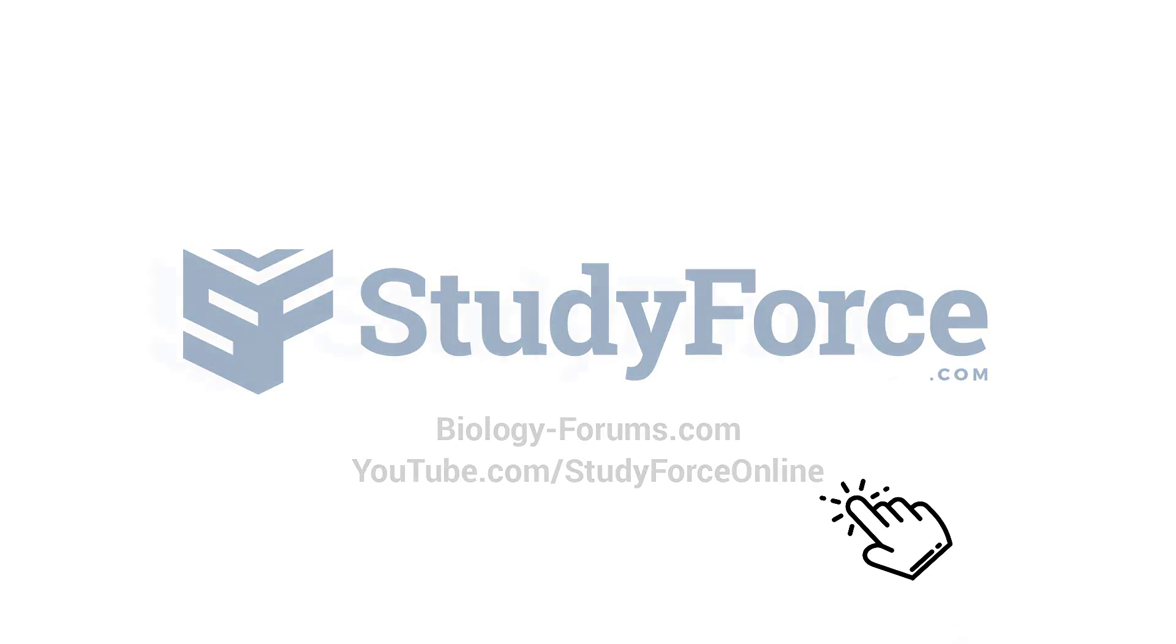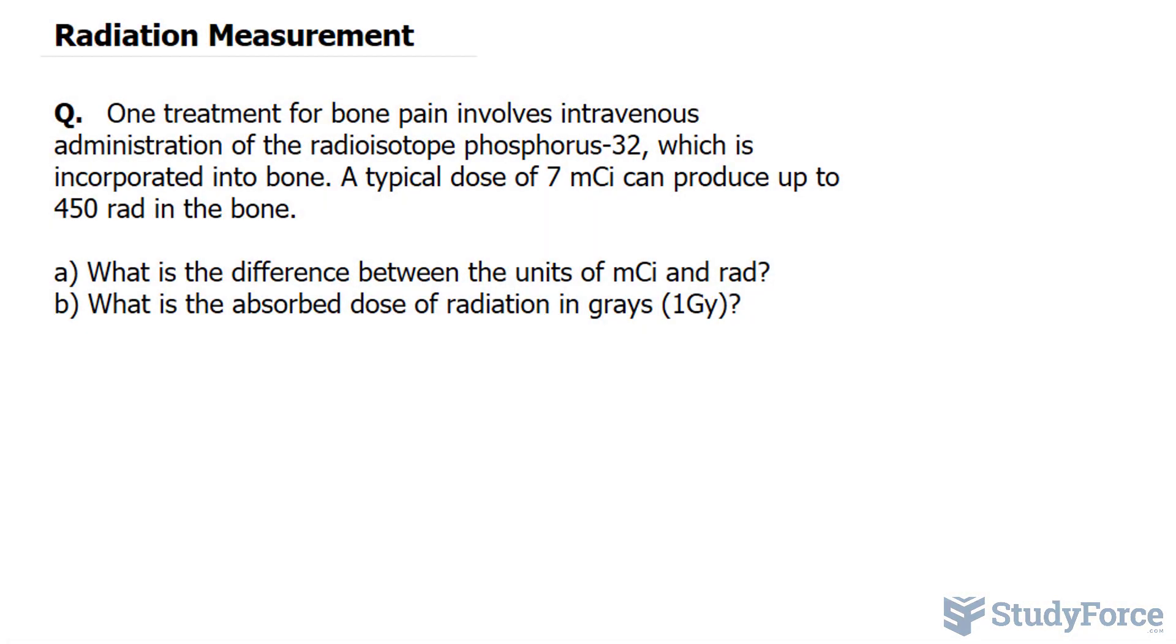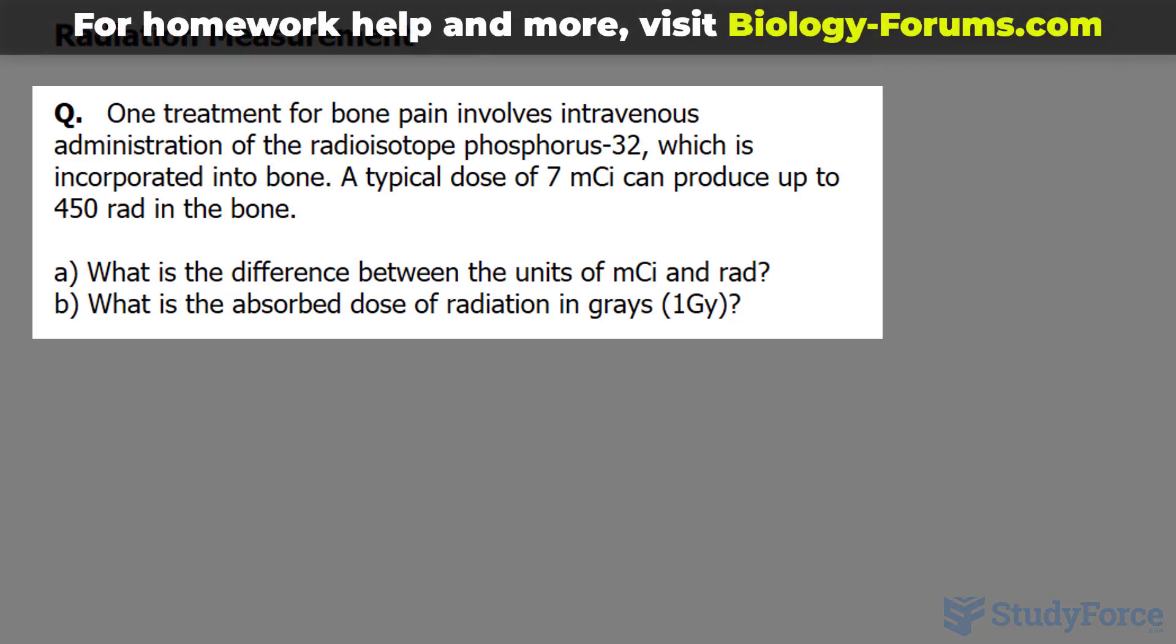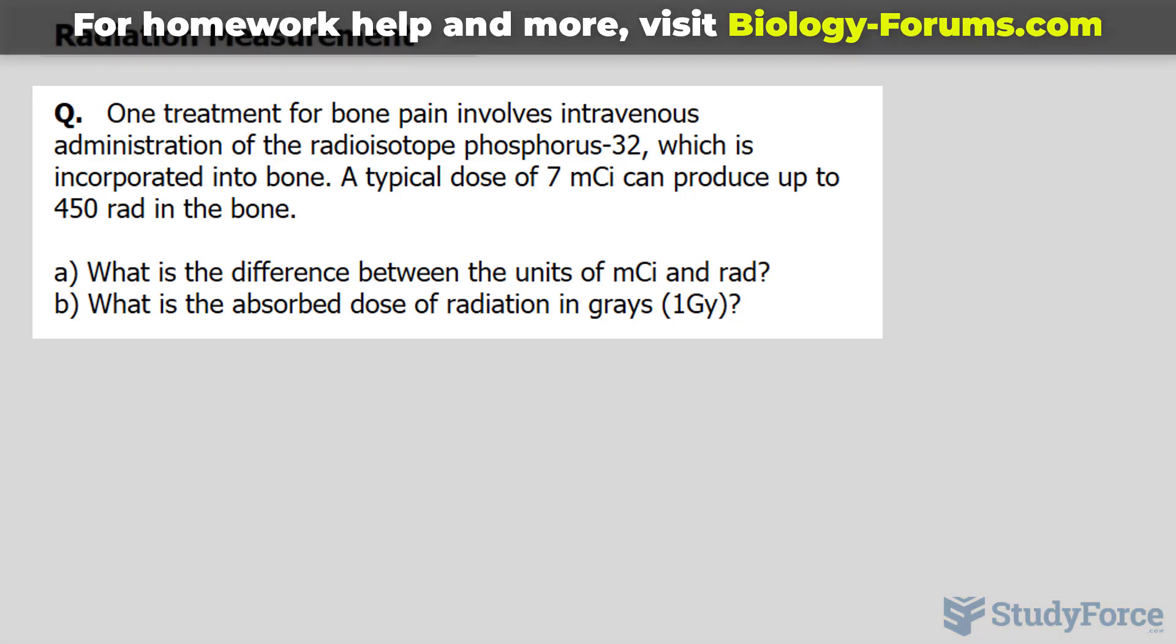In this lesson, we'll go through one example discussing radiation measurement. The question reads: one treatment for bone pain involves intravenous administration of the radioisotope phosphorus-32, which is incorporated into bone. A typical dose of 7 millicuries can produce up to 450 rad in the bone.